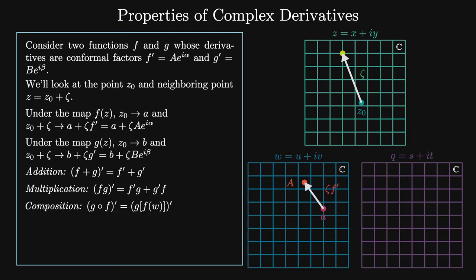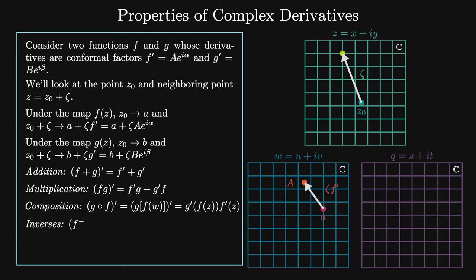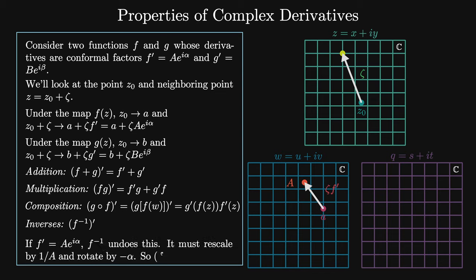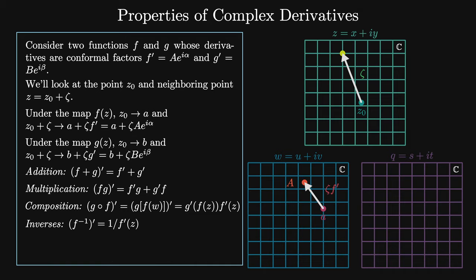Under composition g(f(z)), applying f (rescaling by a, rotation by α) then g (rescaling by b, rotation by β) gives total rescaling ab and rotation α + β. Thus the chain rule gives (g∘f)′(z) = g′(f(z))·f′(z). For the inverse function: if f acts as rescaling by a and rotation by α, then f⁻¹ undoes this — rescaling by 1/a and rotation by −α. Thus (f⁻¹)′ = 1/f′(z). We can use these rules to show that every analytic function can locally be represented by a power series and that analytic functions are infinitely differentiable.